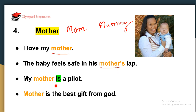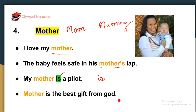'My mother is a pilot.' Here we have highlighted 'is' — just to make you understand that whenever we are talking about a single object, we use 'is.' Next: 'Mother is the best gift from God.' This is how you can use the word mother in sentences.